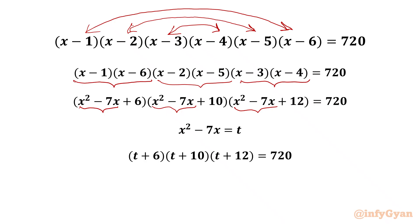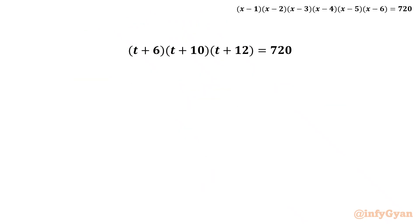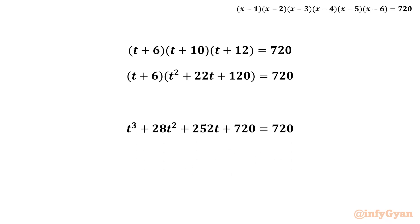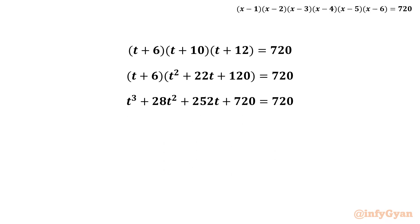This is a cubic equation in t, so we will expand the left-hand side. Let's multiply t + 10 and t + 12 first: we get t² + 22t + 120. Now multiplying with t + 6, we obtain t³ + 28t² + 252t + 720 on the LHS.